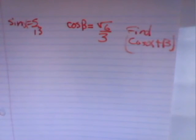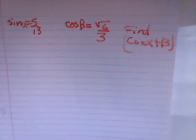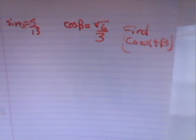If sine alpha equals 5 over 13 within the restriction of 0 to alpha to pi over 2, and cosine beta equals the square root of 6 over 3 within the restriction of 3 pi over 2 to beta to 2 pi, find cosine of alpha plus beta.